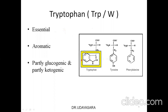Tryptophan has the special group known as the indole group. As you know, tyrosine has a phenol ring and phenylalanine has a benzene ring. Based on its metabolism, tryptophan is partly glucogenic and partly ketogenic. The other partly glucogenic and partly ketogenic amino acids are lysine, isoleucine, phenylalanine, and tyrosine — remembered by the mnemonic LIP Tea.